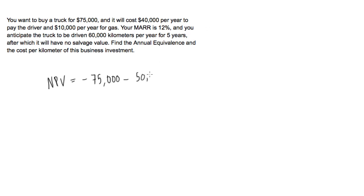We're going to have 50,000 times (1 minus 1.12 to the negative 5) all over 0.12. If you're not sure where this formula is coming from, we've been using this in previous videos, so you can go back and check if you're unsure. Otherwise, we'll just continue on.